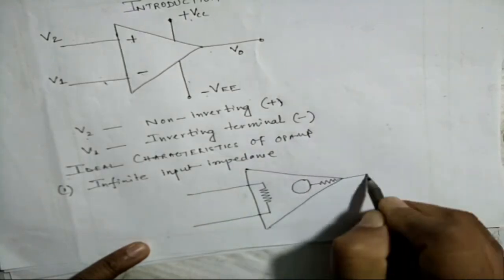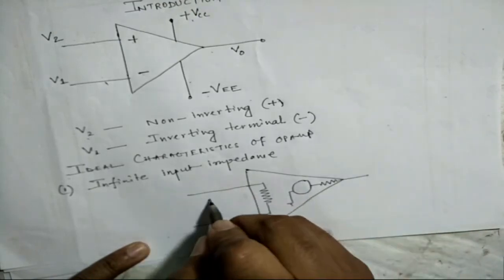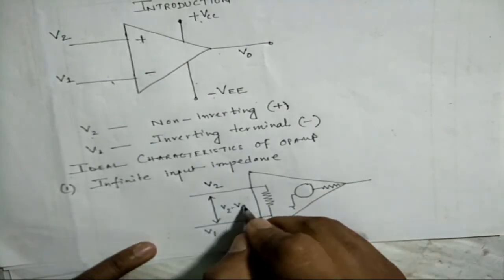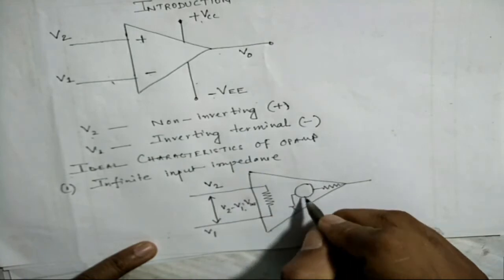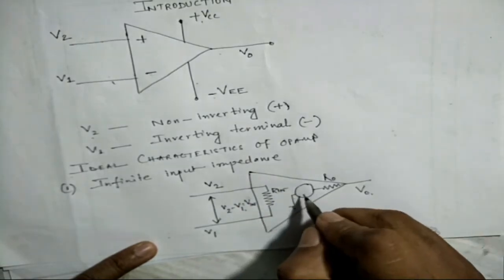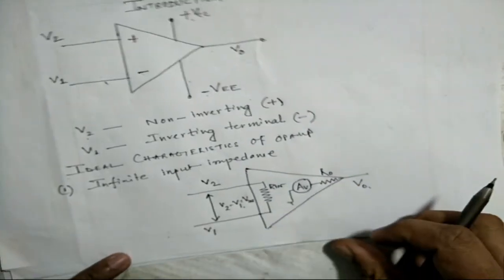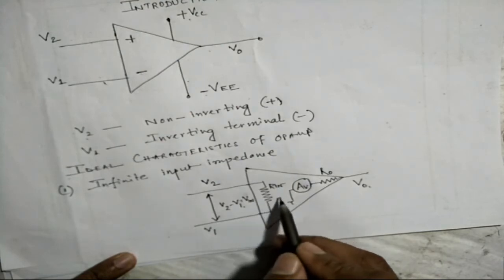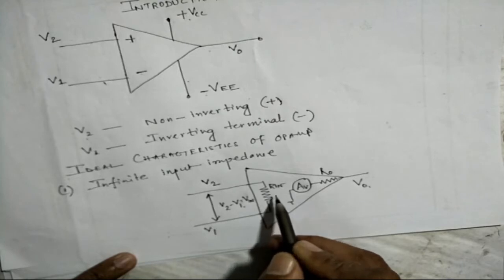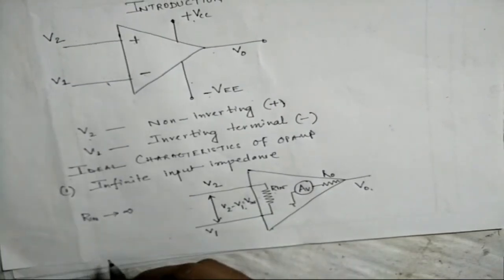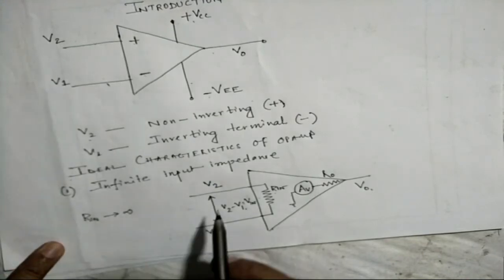If we draw the equivalent circuit of the operational amplifier, this difference is V2 minus V1 and we will call it Vin, and this is R0, this is Rin. The infinite input impedance here means the input impedance of the operational amplifier, if you look into the circuit, this is Rin which is actually infinite, but in practical case it is in the range of megaohms. That's a very important feature of an operational amplifier.